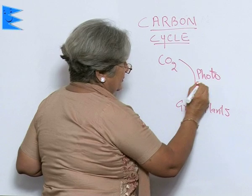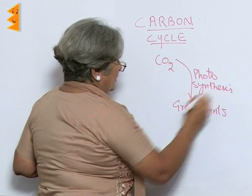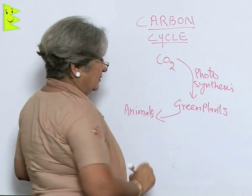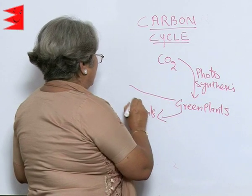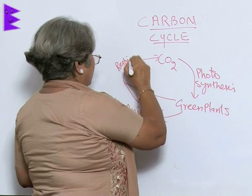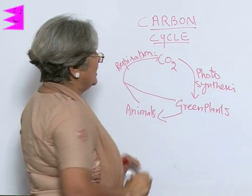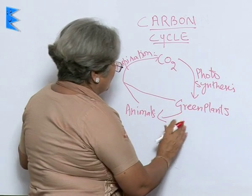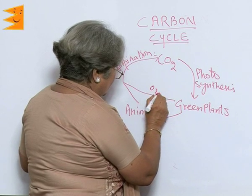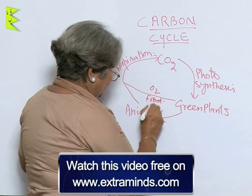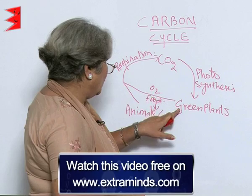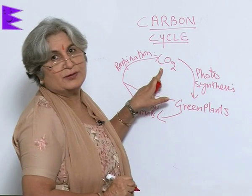Green plants are eaten by animals. Both green plants and animals respire to release carbon dioxide back to the atmosphere. Green plants give two things: oxygen and food. The food is eaten by animals, and oxygen is used by both green plants and animals for respiration.